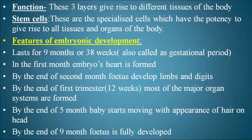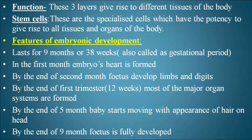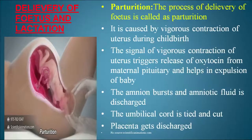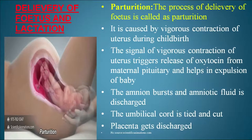Pregnancy lasts for nine months or 38 weeks, also called the gestational period. In the first month, the embryo's heart is formed. By the second month, the fetus develops limbs and digits. By the end of the first trimester — three months or 12 weeks — most major organ systems are formed. By the end of five months, the baby starts moving with the appearance of hair on the head.